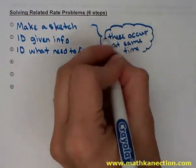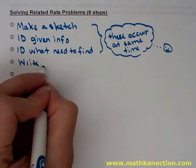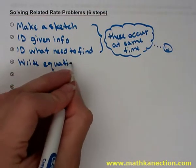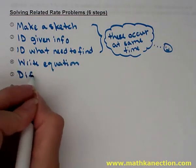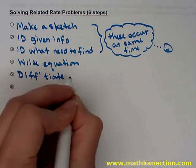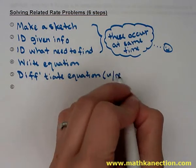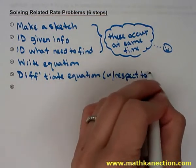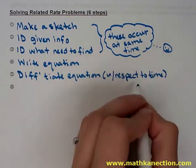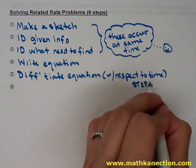Step four: write down the equation that you will need. Step five: derive, so differentiate the equation. And step six: substitute the values and solve the problem.